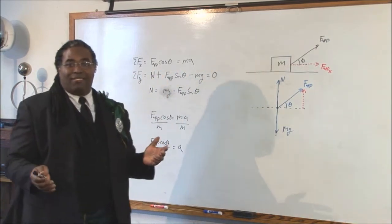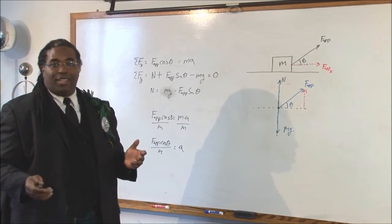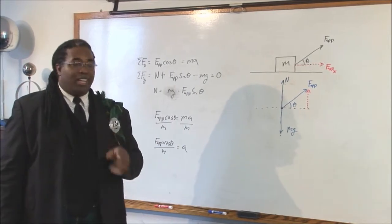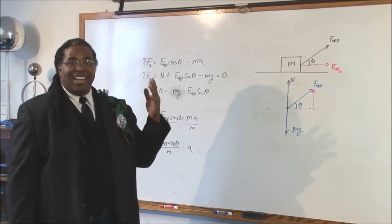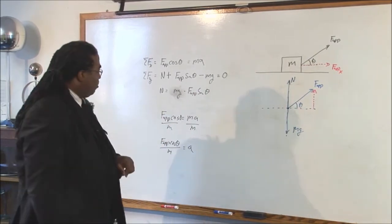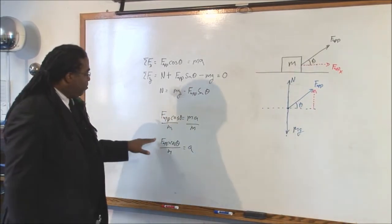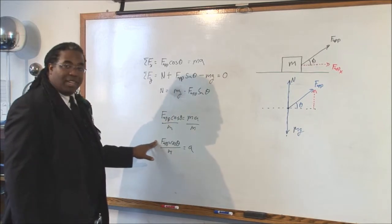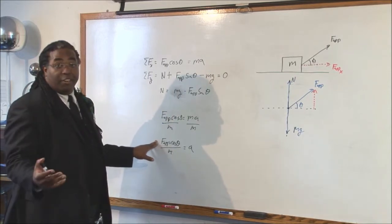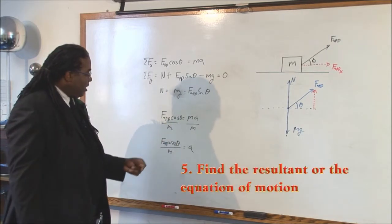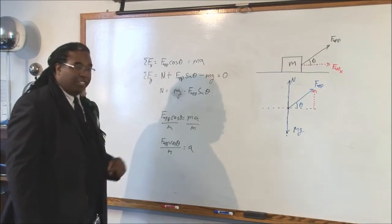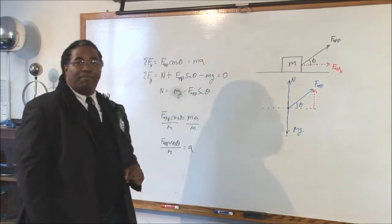Again, the five steps. If this problem had numbers, go ahead and plug them in. Put in what your applied force is — that'll be in units of newtons. Put in your cosine theta, then divide by the mass to get your acceleration.